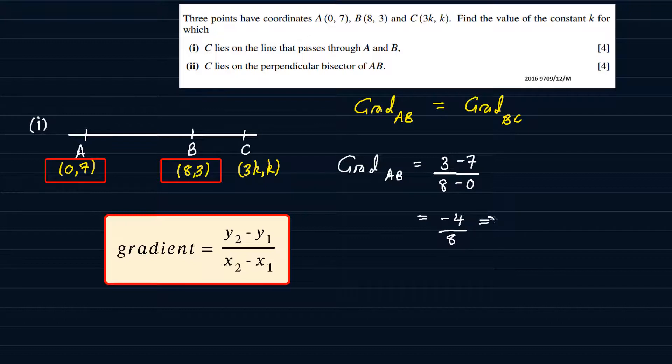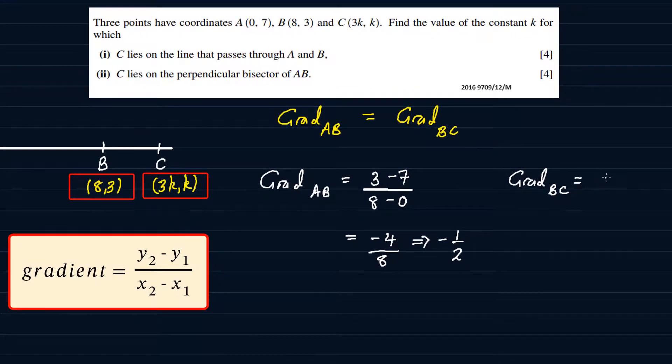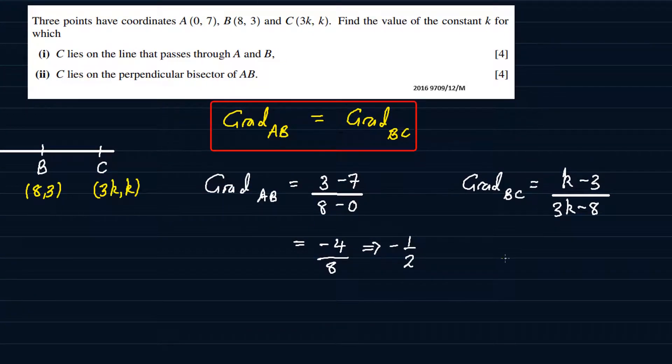And for the gradient of BC, we are going to do k minus 3 divided by 3k minus 8. So this is just going to be the gradient of BC. We can't simplify this further. So we are going to equate the two.